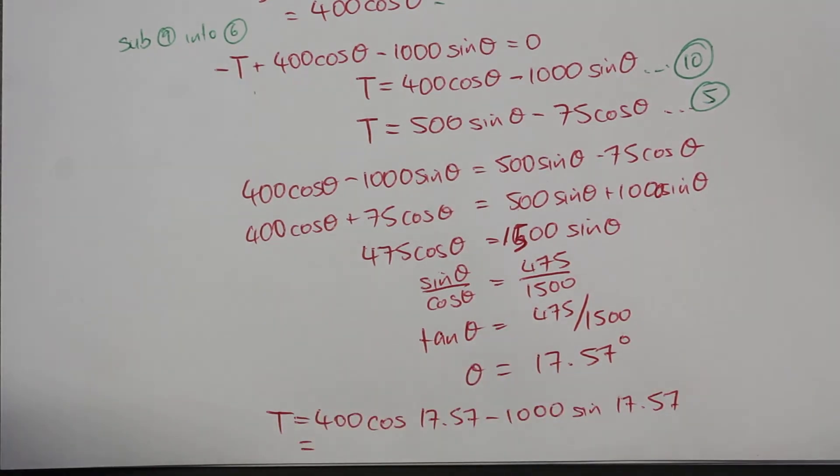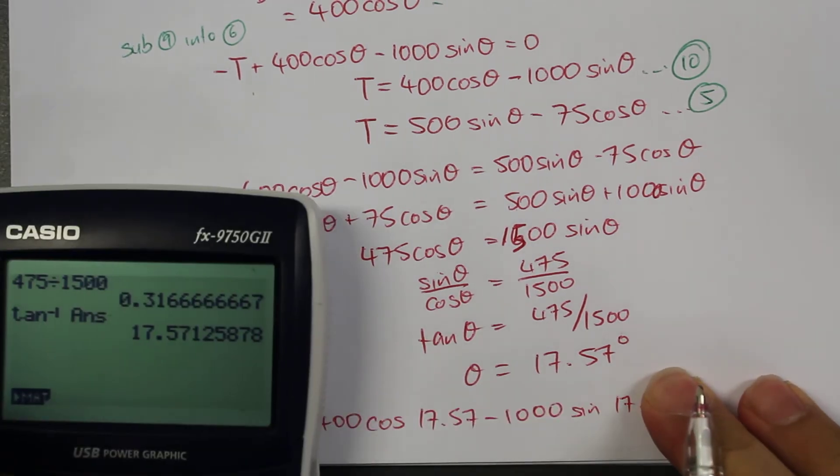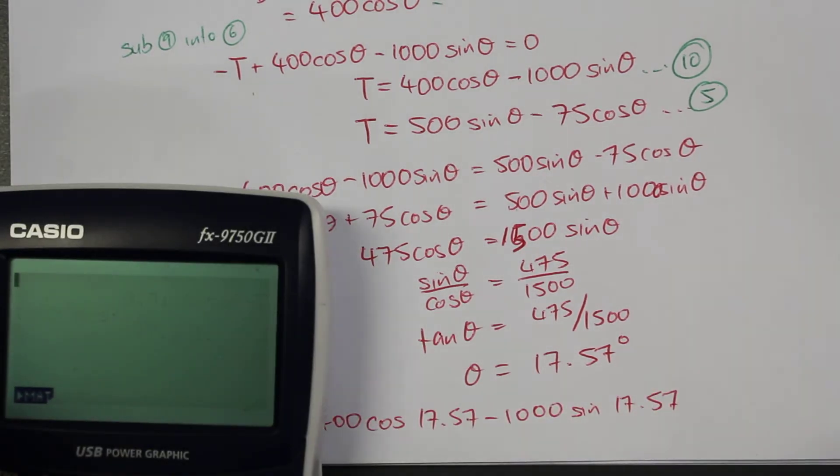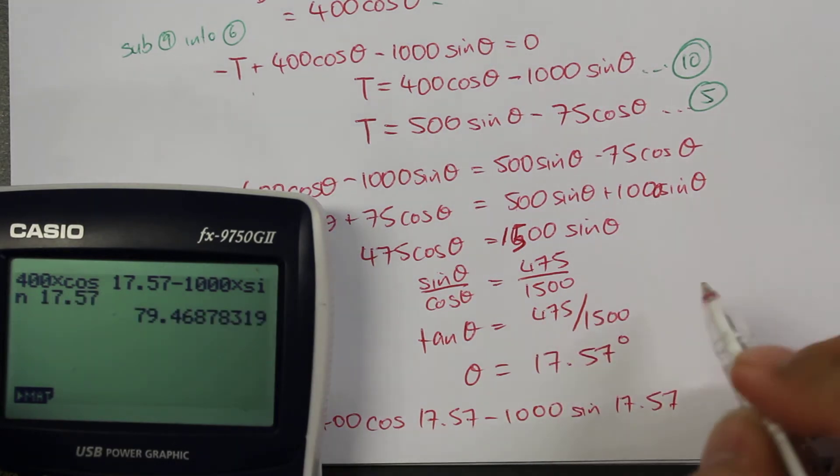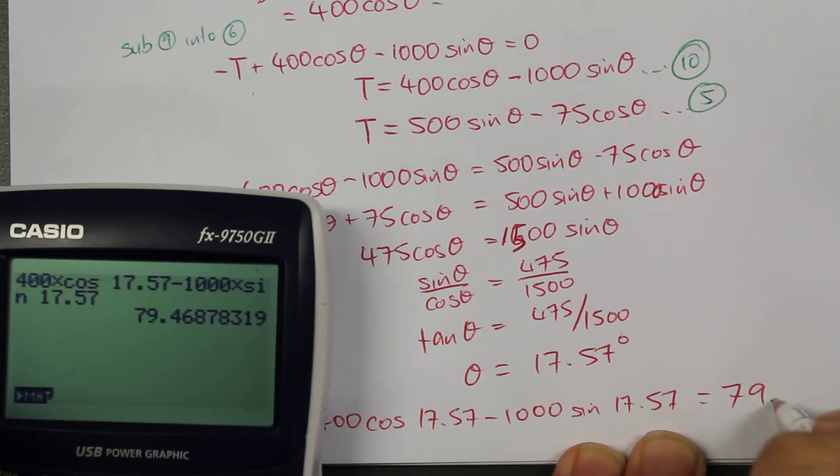We can place that into a calculator. So that's 400 times cosine 17.57 minus 1000 times sine 17.57, and we get 79.46. Let's round this to 79.5 newtons.